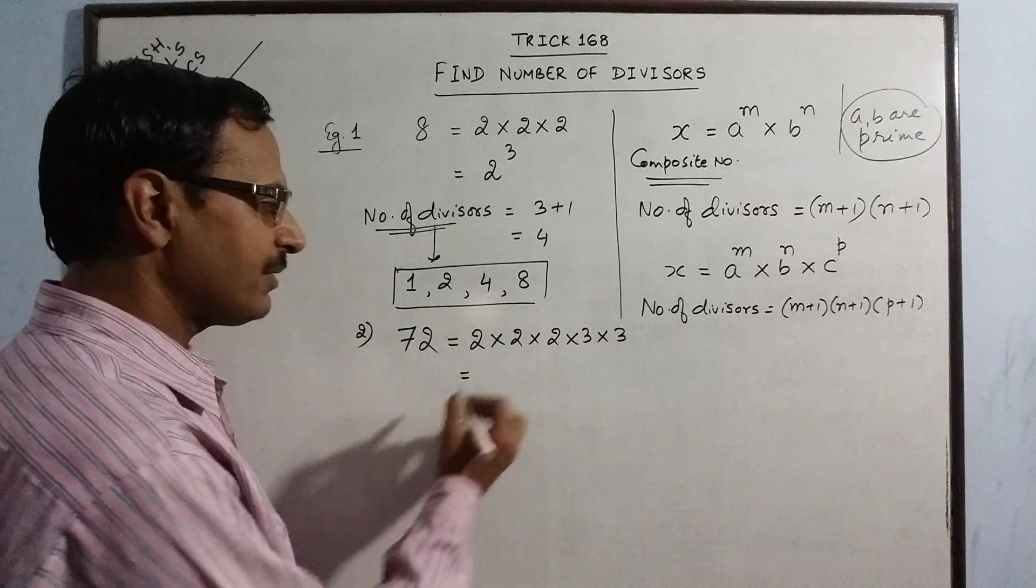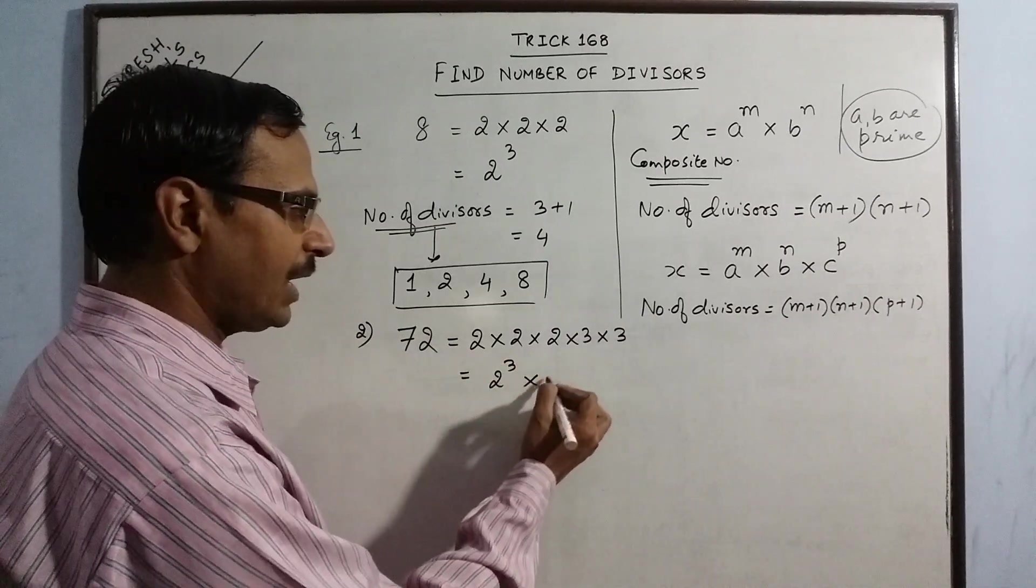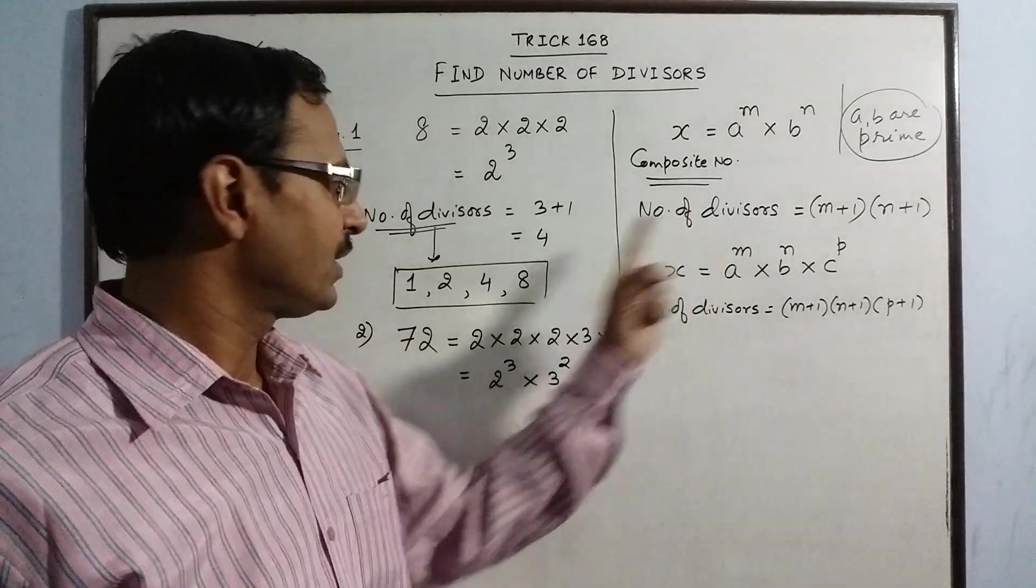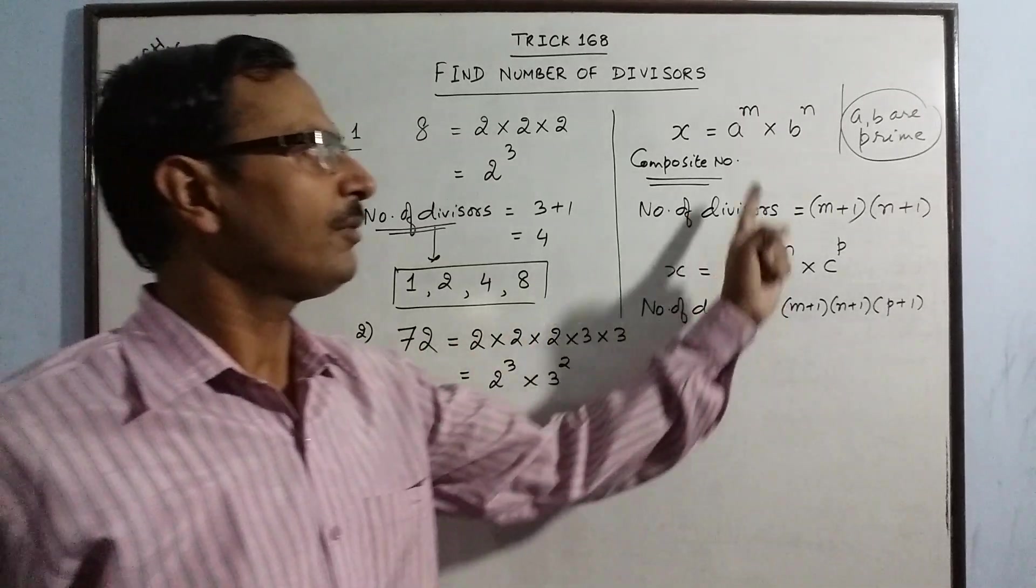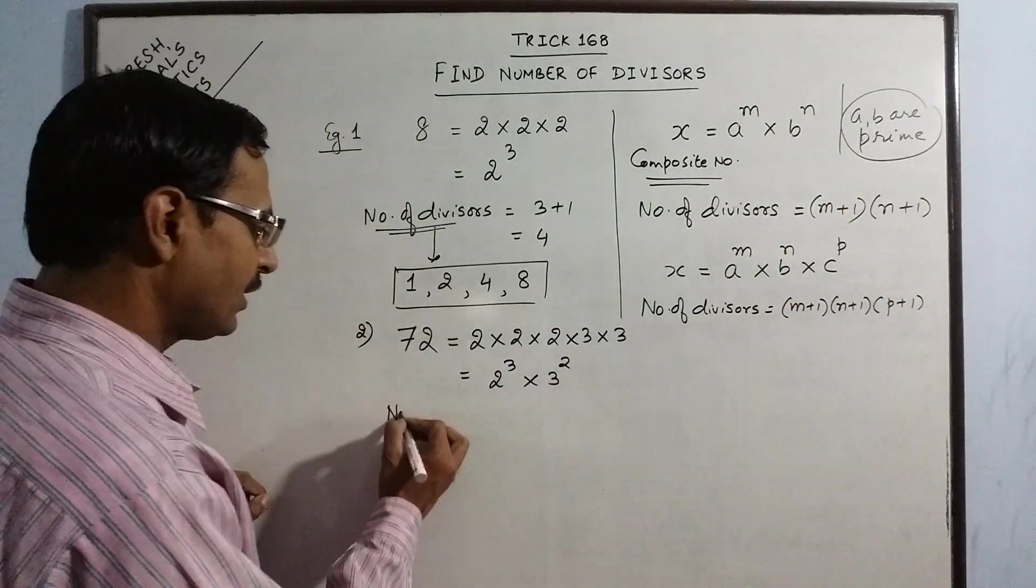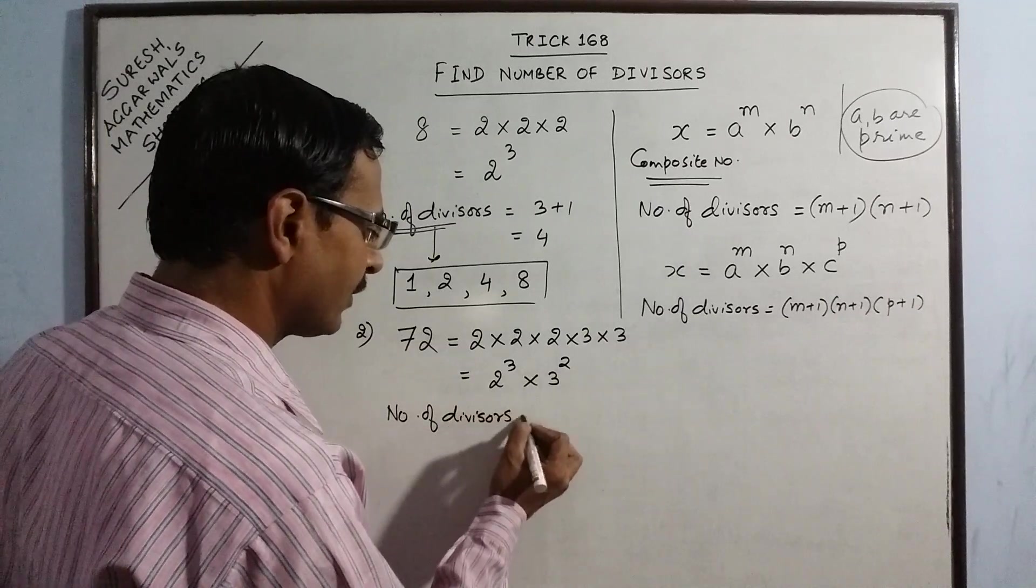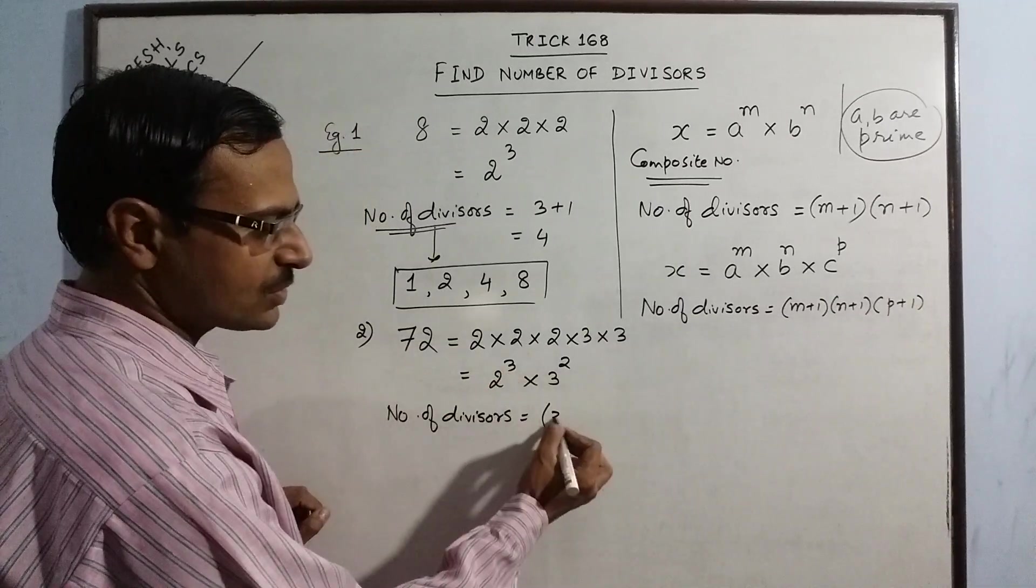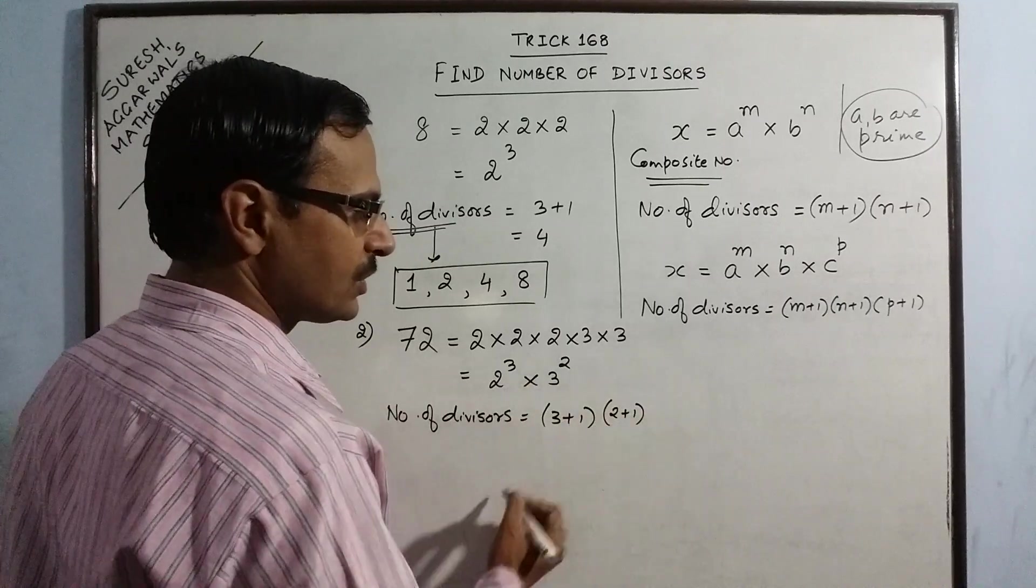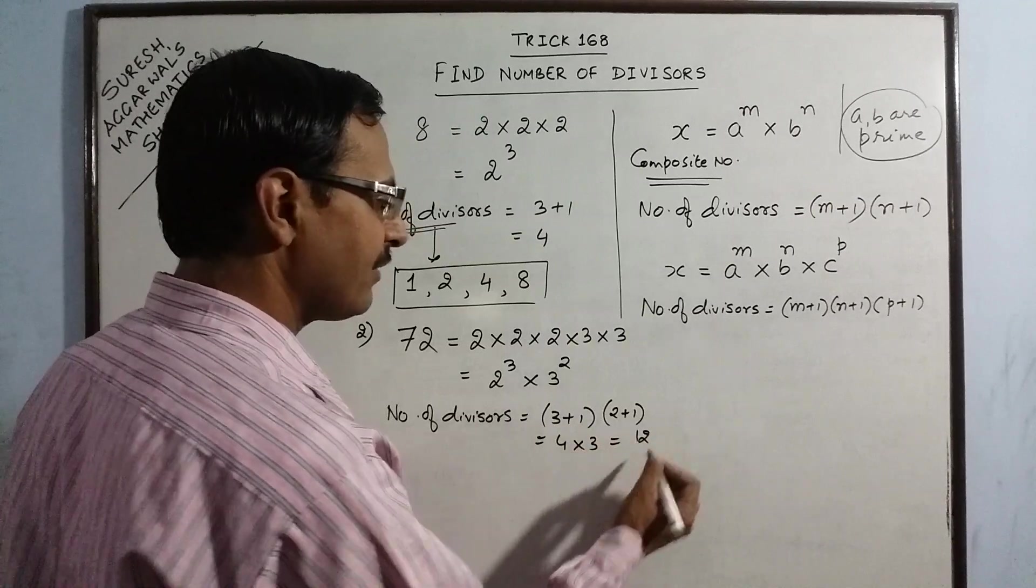Now this can be expressed in powers as 2 raised to power 3, 2 repeated 3 times and 3 repeated 2 times. So now we have expressed this number 72 in the form of a raised to power m into b raised to power n. So directly we can find the number of divisors of this composite number as the power is 3 here, so 3 plus 1 and the power is 2 here, so 2 plus 1. So this gives us 4 into 3, 12 divisors.